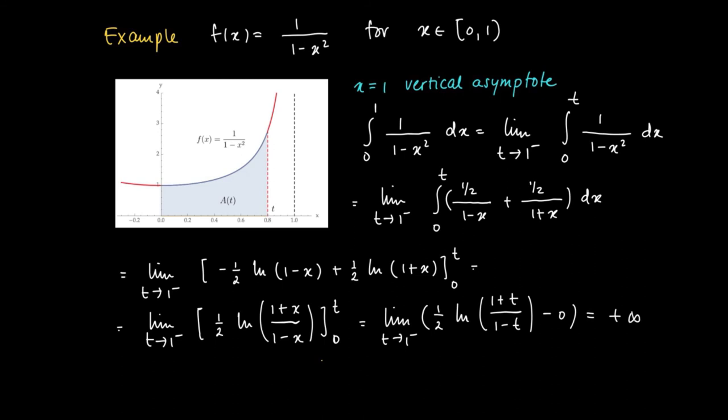So we calculate the limit as t approaches 1⁻ of 1/2 · ln((1+t)/(1-t)). What happens as t goes to 1⁻? The denominator is still positive but very small, and the numerator goes to 2. We divide something that equals almost 2 by something very small and positive. So (1+t)/(1-t) goes to infinity as t approaches 1⁻, and thus 1/2 · ln of this term also goes to plus infinity.